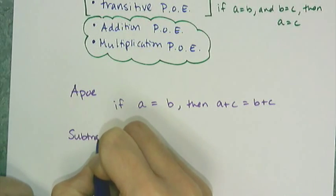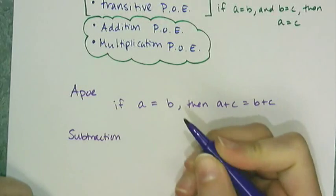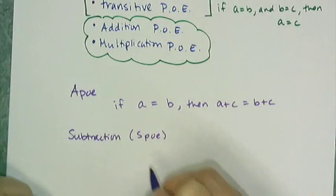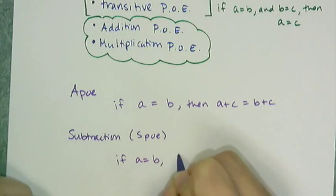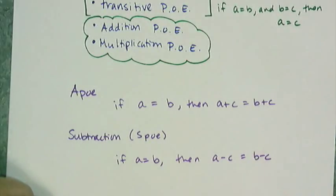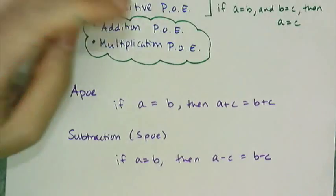Subtraction has a version of the property of equality, and we're going to call this one SPO. And it says if A equals B, then A minus C equals B minus C. And it says I can take away the same quantity from both sides of the equation, and it's still going to be equal.